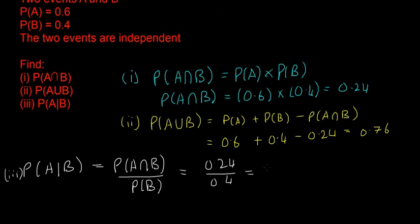That's interesting. The probability of A happening if we know that B has already happened is 0.6, which is the exact same as the original probability of A.